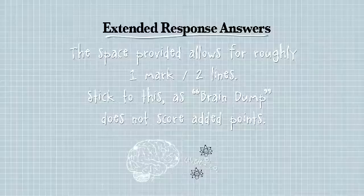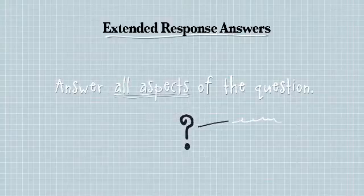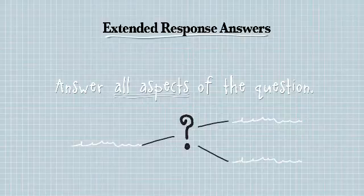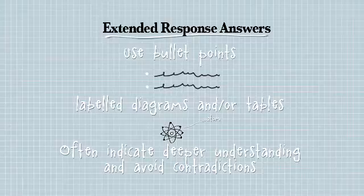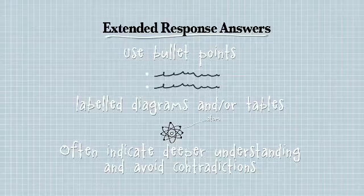Don't just do a big brain dump where you write down everything you know about a topic, because the marks are for answering the question. Make sure you address all parts of the question. Think about structuring your answer — perhaps a table or bullet points will help. In your chemistry exam, you don't have to answer in essay style. You can use dot points, shorthand, little arrows meaning increase or decrease in concentration. Think about whether a table or bullet points will give that deeper understanding.